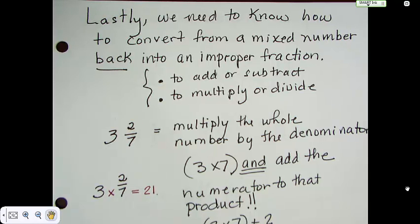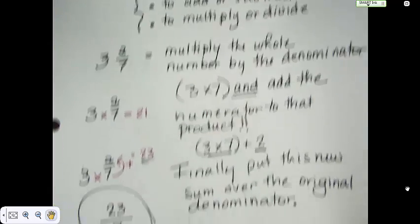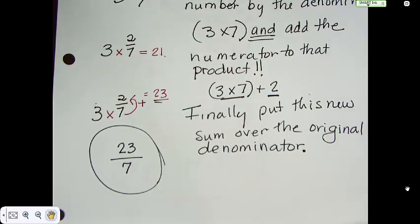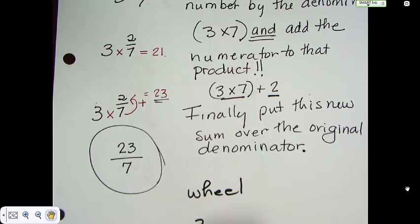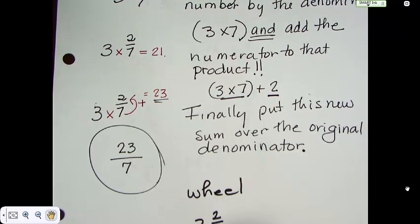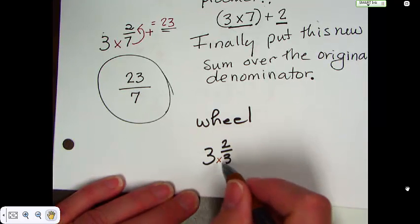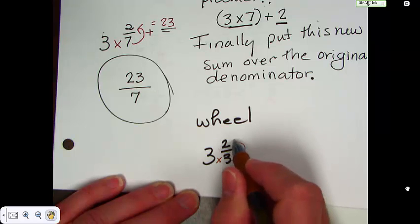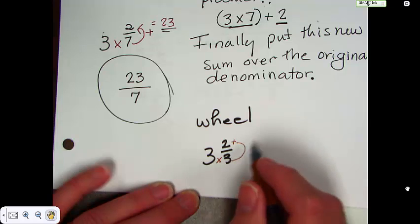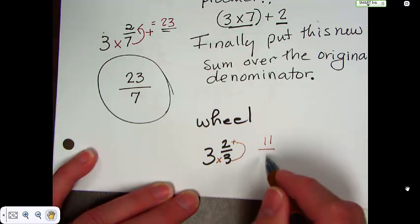A lot of people used to call this the wheel. And I'll give you a really good example. 3 and 2 thirds. And using a wheel, we would start here. This is the wheel. 3 times 3. 3 times 3, which is 9. 9 plus the 2, which is 11. 11 over the original denominator, which is 3.